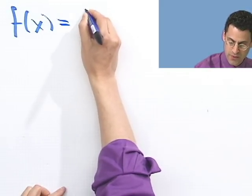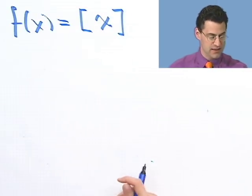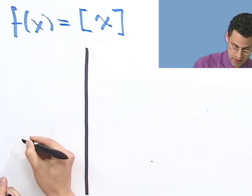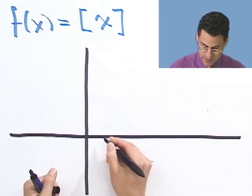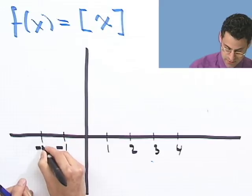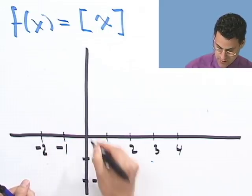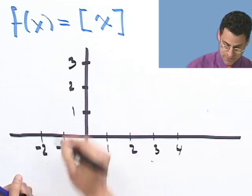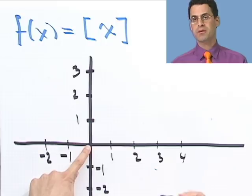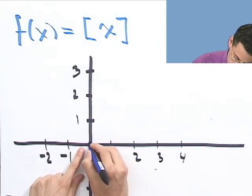Given how the function is defined, what does the graph look like? Let's graph f of x equals the greatest integer function of x. Let me draw some axes here: here's y, here's x. I'll put in numbers: 1, 2, 3, 4 on the x-axis, minus 1, minus 2 going left; and on the y-axis, minus 1, minus 2 going down, 1 and 2 going up. I'm going to plug in x values and ask for the y values — the greatest integer less than or equal to that x value. Starting right at the origin: the greatest integer function of 0 is 0, because any integer input just returns itself.